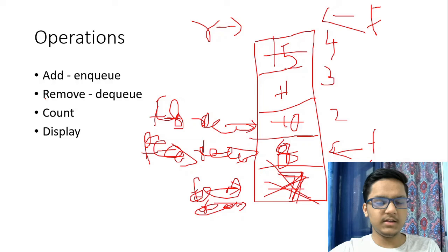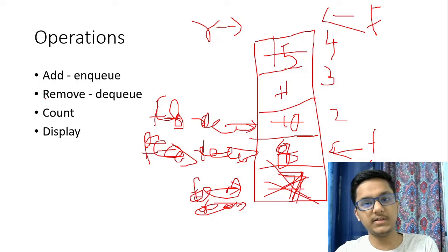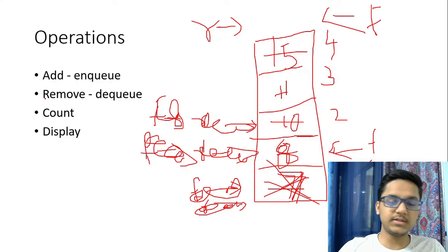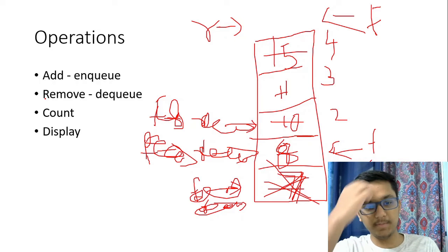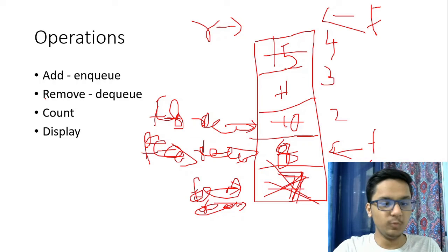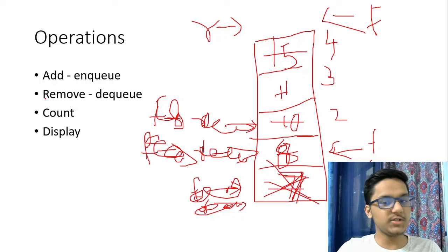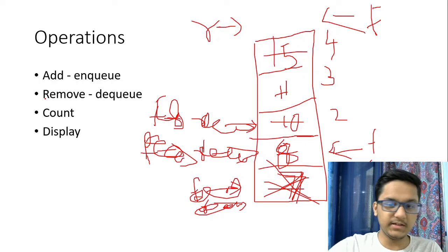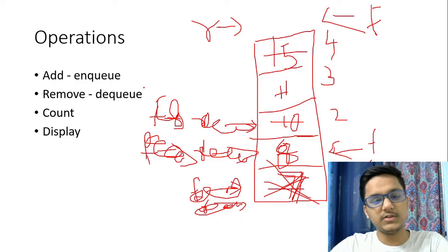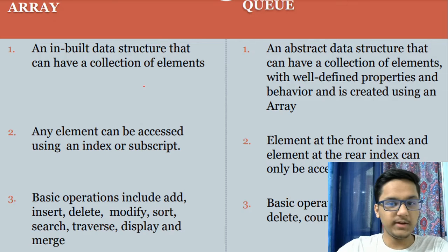Now, in stacks, the addition of an element is called push and the removal is called pop. But in queues, the addition of an element is called enqueue and the removal is called dequeue. There are also two other operations: count, which counts the number of elements, and display, which displays all the elements in a queue. Enqueue and dequeue — addition and removal — that's pretty straightforward.